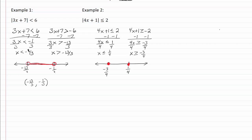We have x is less than or equal to one-fourth and greater than or equal to negative three-fourths and so there's our graph.